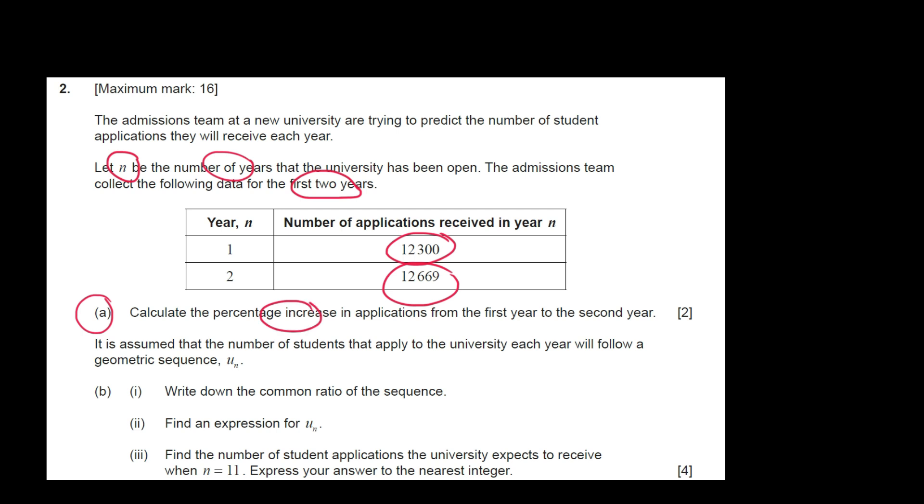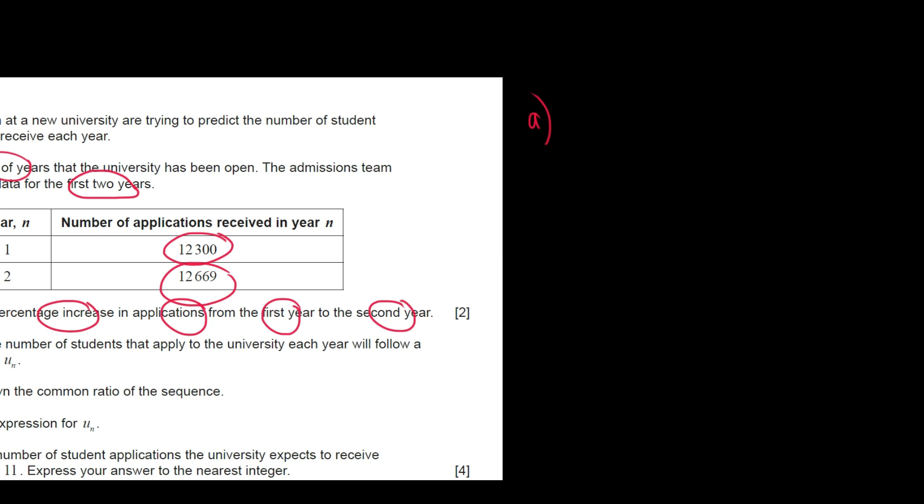Question A. Calculate the percentage increase in applications from the first year to the second year. Okay, so basic formula of percentage increase. Let me solve it over here. When you want to calculate a percentage, not just increase but decrease as well, let's just call it a percentage change. You want to take final value minus initial value divided by the initial value times 100. So in this case the final value is 12,669. Initial value is 12,300. And what I mean by final and initial in this context is first and second year respectively. Divided by 12,300 multiplied with 100.